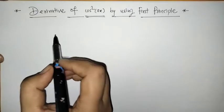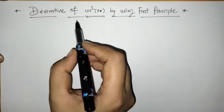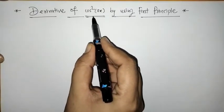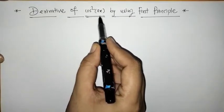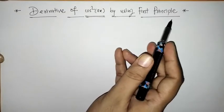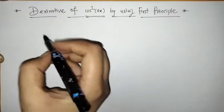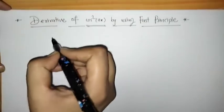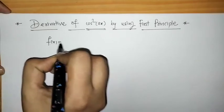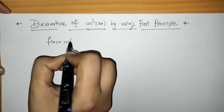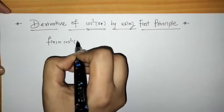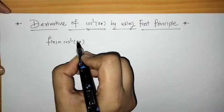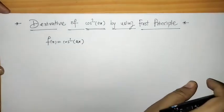Hello everyone, welcome to Unlock Maths. Today we have to find the derivative of cos squared ax by using the first principle, where a is a constant.